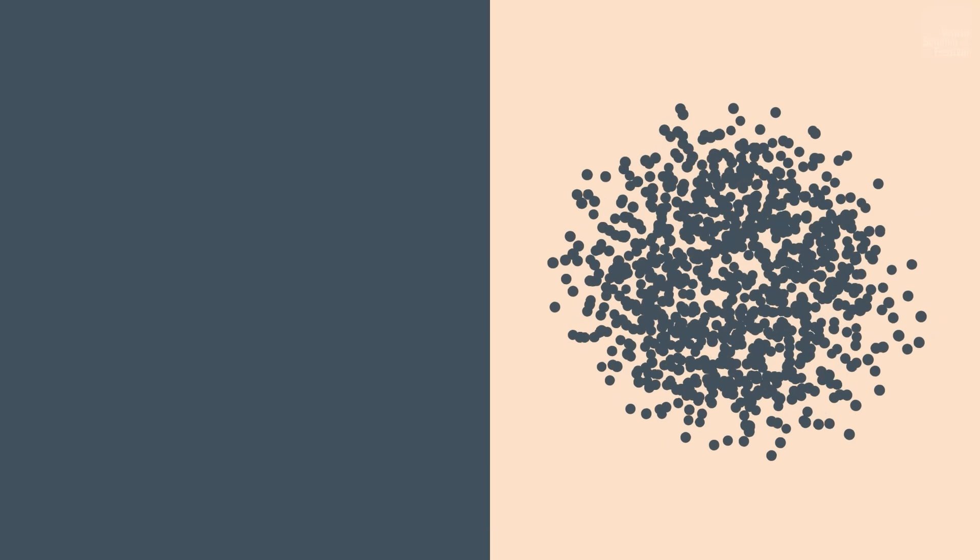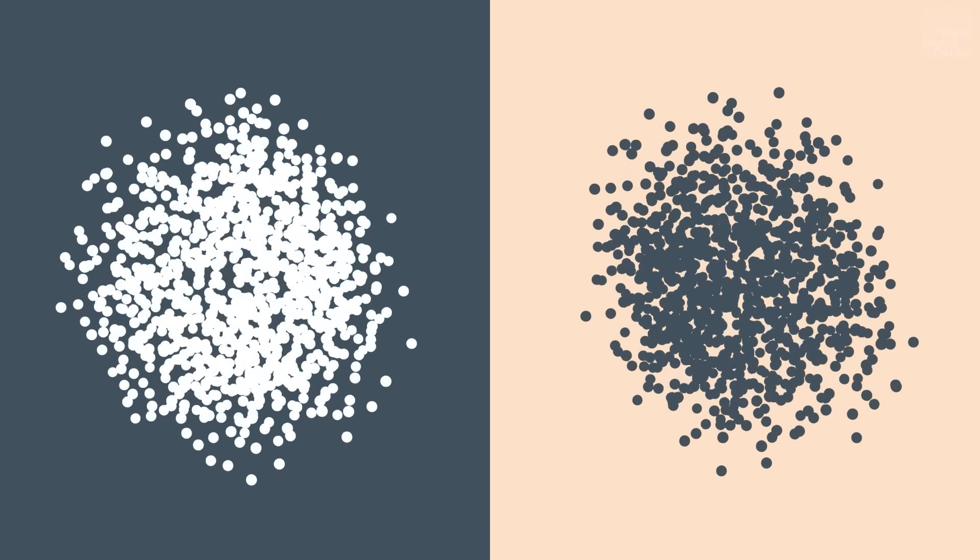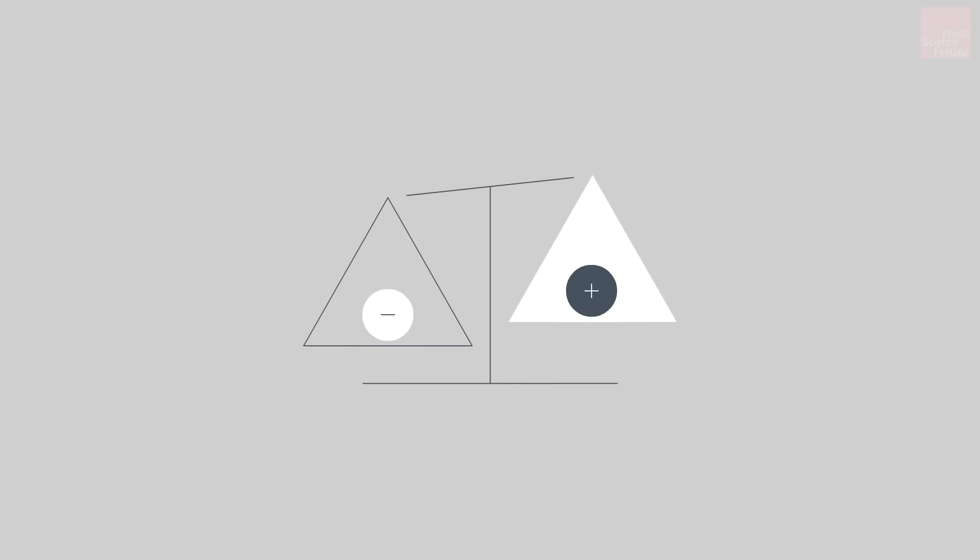We survived. And the explanation may lie in a tiny but universe-changing difference. The calculations show that if for every billion antiprotons created in the early universe there were a billion and one protons, that sliver of imbalance would yield a residue of matter after all the rest annihilated. And that tiny excess — one in a billion — is all we'd need to explain the matter that makes up everything we see today: stars, planets, people, everything. So where did that small matter-antimatter imbalance come from?